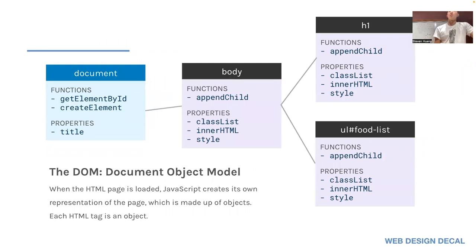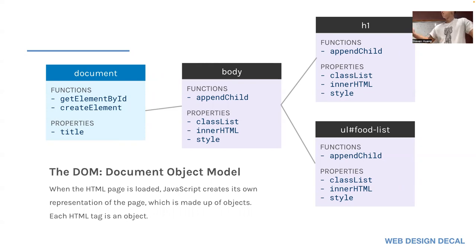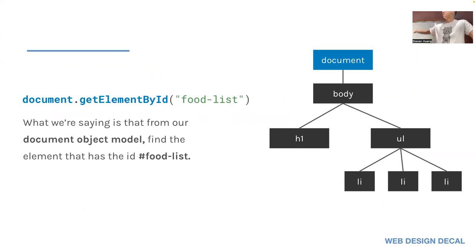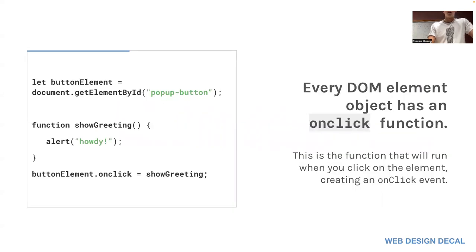We can have a quick review of event handlers. We went over the Document Object Model a couple weeks ago — it's loaded whenever you start up JavaScript and creates its own representation of the page with functions and properties you've seen in past homeworks and labs. We can access the DOM through the document object, like document.getElementById, which gets the element with the id 'food-list' and stores it in a variable.